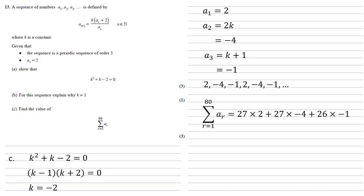So our sum is 27 times 2 plus 27 times minus 4 plus 26 times minus 1, which is 54 minus 108 minus 26, which is minus 80.